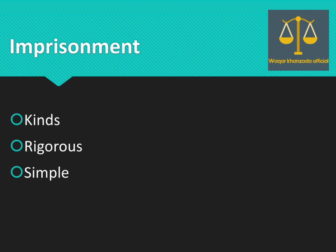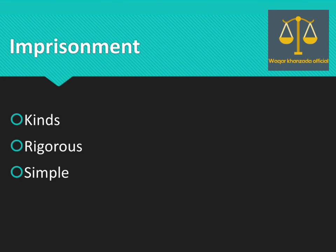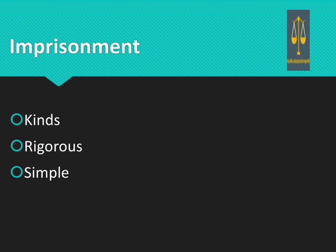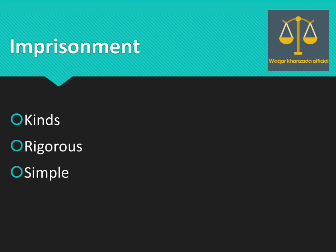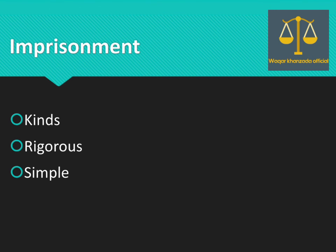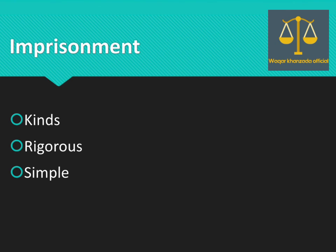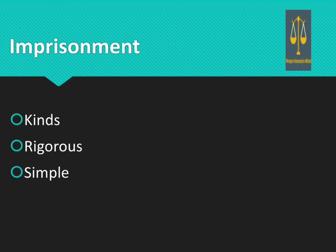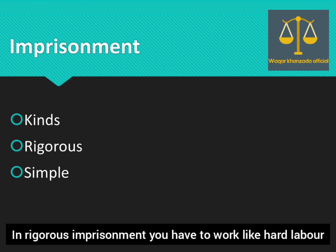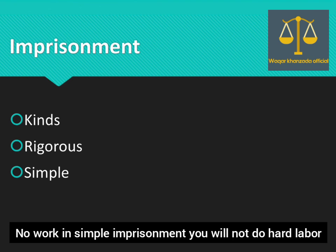Imprisonment means confinement of a convict within certain prescribed limits. The maximum period of imprisonment for an offense is 14 years under Section 55 of Pakistan Penal Code, and the shortest term is 24 hours. Imprisonment میں آپ کو certain limits میں محدود کیا جائے گا — گھر میں نظربندی بھی ہو سکتی ہے یا جیل بھی۔ Imprisonment دو طرح کی ہوتی ہے: rigorous اور simple۔ Rigorous imprisonment میں hard labor لیا جا سکتا ہے جیسے digging of earth، جبکہ simple imprisonment میں کوئی کام نہیں کرنا پڑتا۔